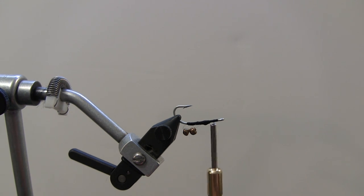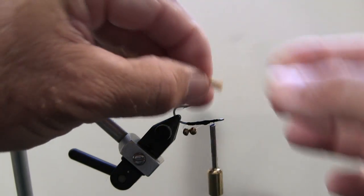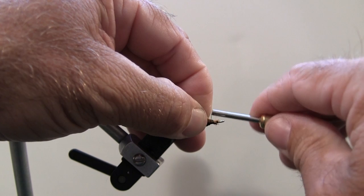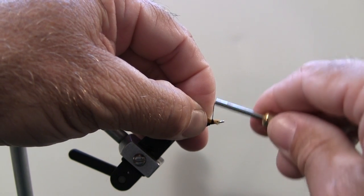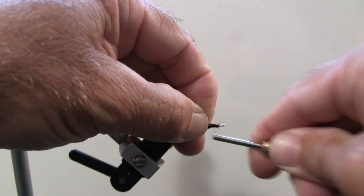For the wing material I'm going to be using some bucktail. You can use whatever you feel is appropriate. I have a little piece of tan bucktail. I'm going to hold that just behind the eye of the hook. Give it a few loose wraps. Then I'm going to pull straight down. I can finish wrapping that on there.